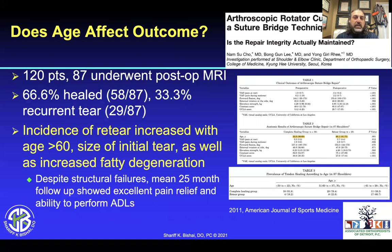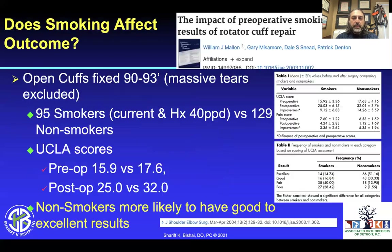Looking at 120 patients and failure rates, about two-thirds healed and one-third failed. Incidence of re-tear increased with age greater than 60, size of initial tear, as well as increased fatty degeneration. So many of these factors can be identified ahead of time to provide a good prediction of whether these repairs will heal.